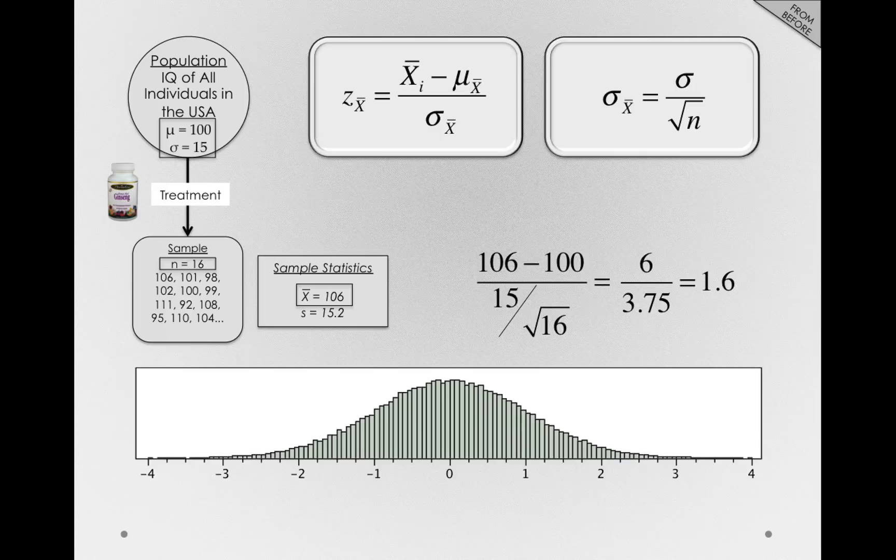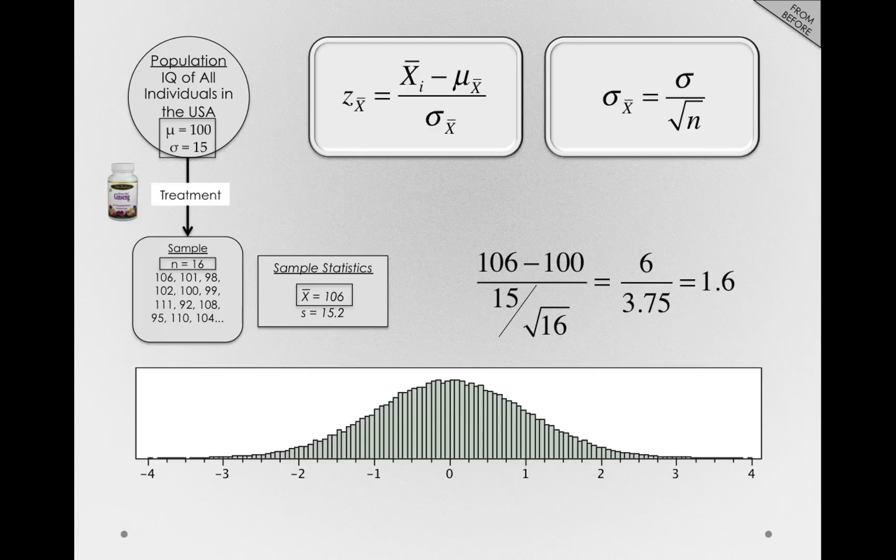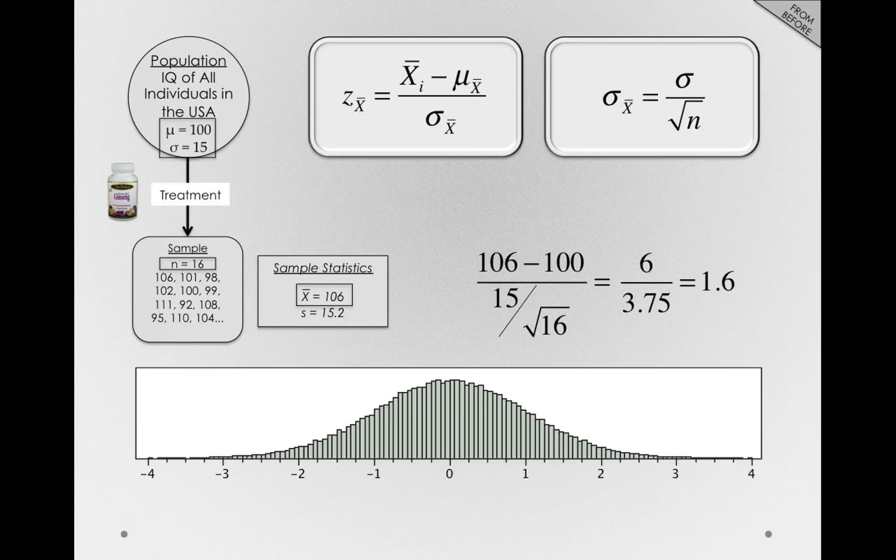So our z-test is simply finding our location in the distribution of sample means, but doing it in a standardized way. Notice for every population, the actual distribution of sample means will have units that correspond to whatever the population units are. But once we've z-scored the distribution of sample means, we'll have that unit normal distribution to which we can compare our single sample mean.